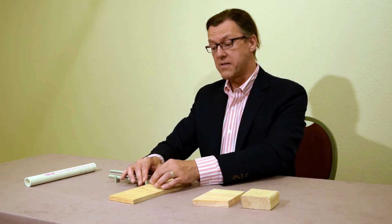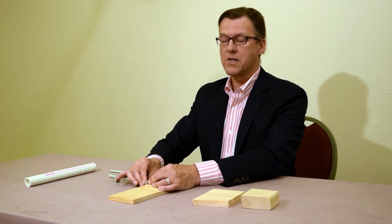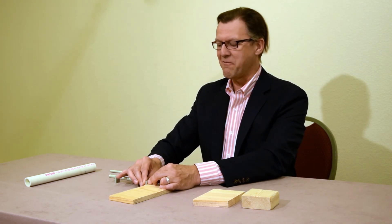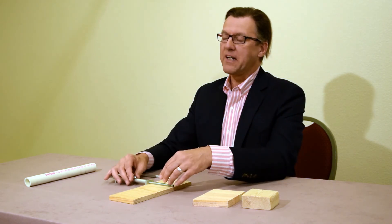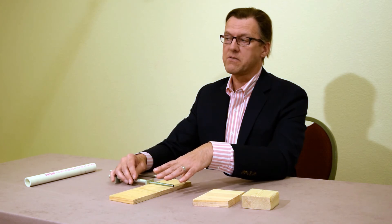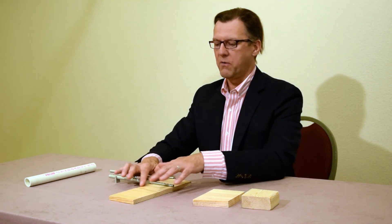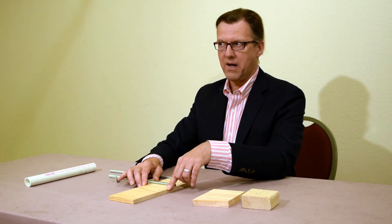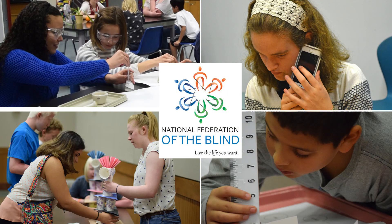And what that means is that this measurement falls between four and one sixteenths and four, meaning I'm getting down to a thirty-second of an inch accuracy. So this measurement is significantly closer to four and one thirty-second of an inch. And that's how blind people do STEM.